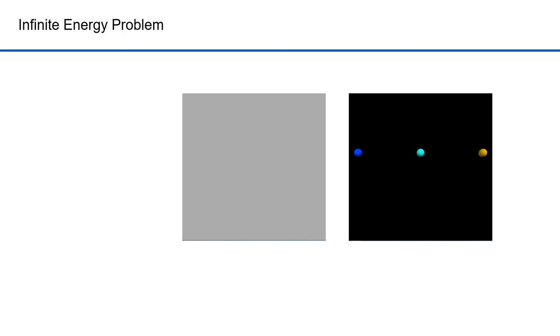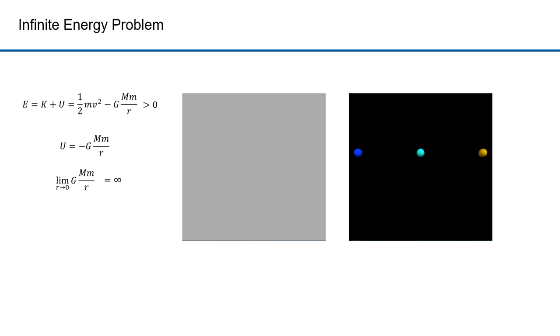The last thing I want to talk about is something to watch out for in these simulations — an odd mathematical contradiction. Here's the equation for energy. Say a moving object follows a hyperbolic path; total energy would be greater than zero. But what if in your simulation r gets really small — close to the center of mass of the point mass? If I take the limit as r approaches zero, the potential energy actually goes to infinity. So the total energy would have started out as a constant but...